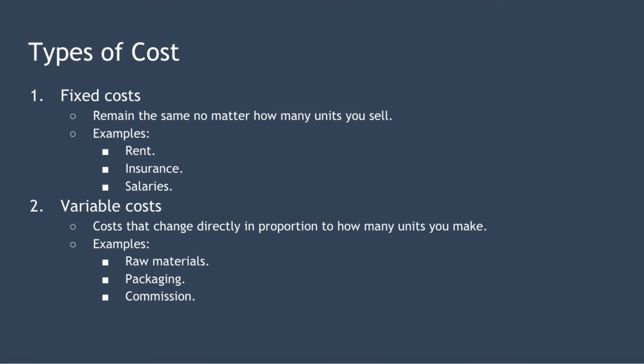There are two types of costs to consider when performing a break-even analysis: fixed costs and variable costs. Fixed costs are costs that remain the same regardless of how many units you sell — you have to spend this money before you can even sell unit number one. Examples of fixed costs include rent, insurance, property taxes, and salaries. Your fixed costs will typically stay the same over the short term, though they may change over the long term.